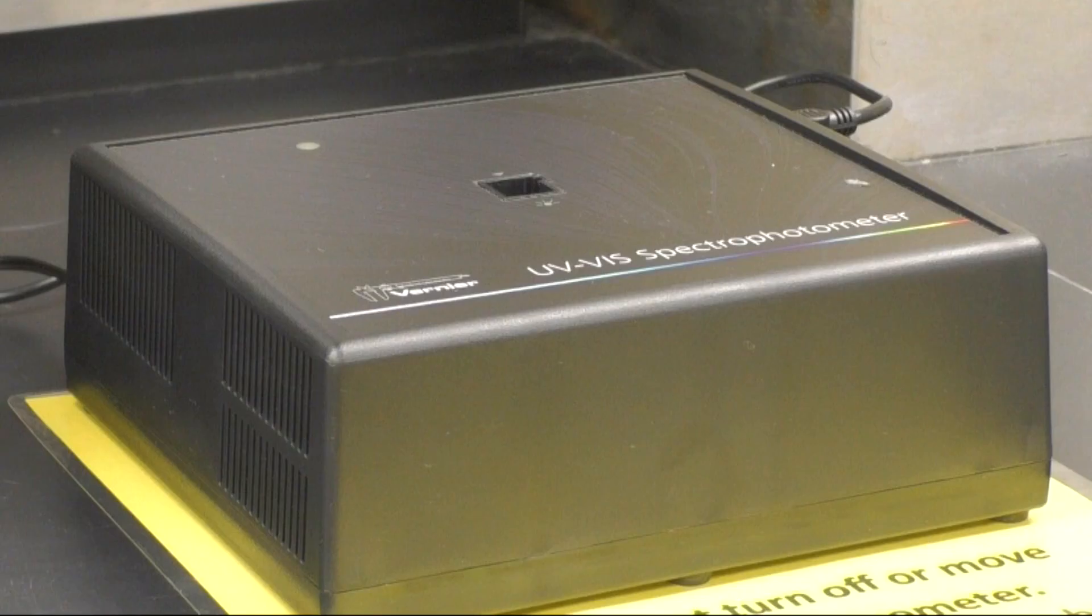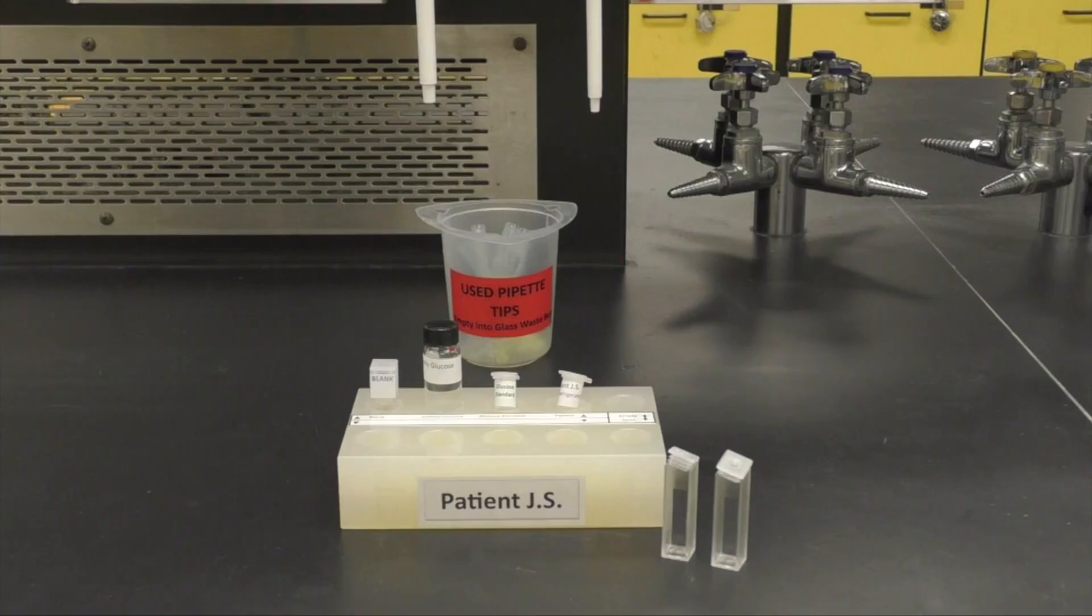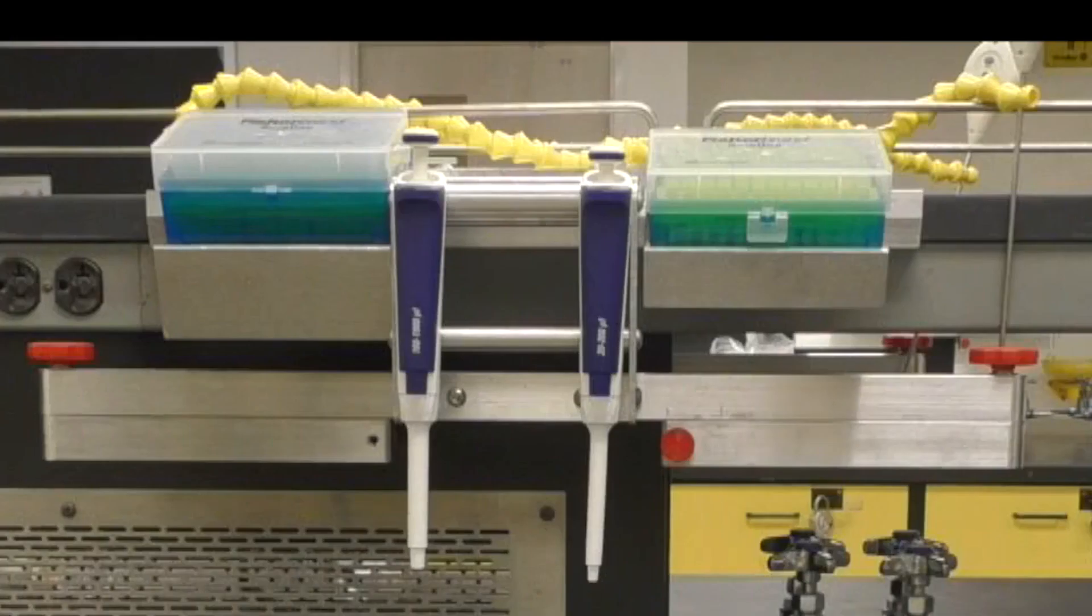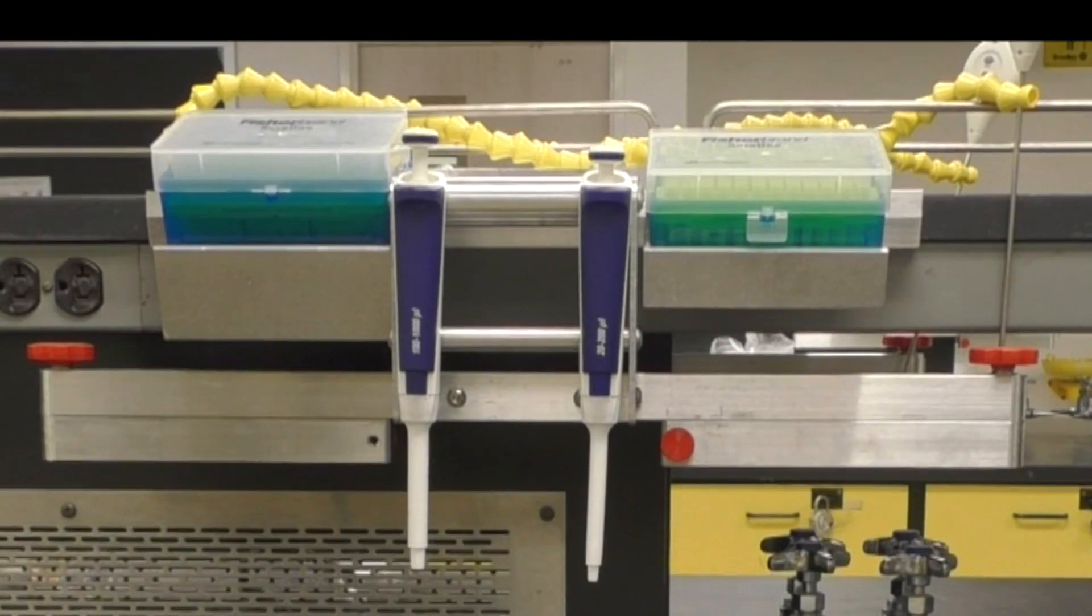You will be using a UV-Vis spectrophotometer since the reaction product absorbs at 340 nanometers. You will also need your patient block, two new cuvettes and caps, along with your micropipette and tips.